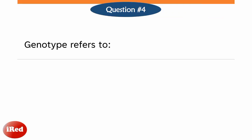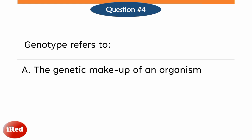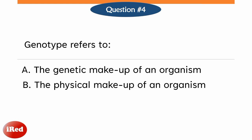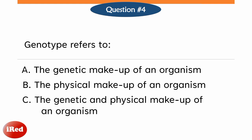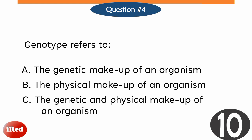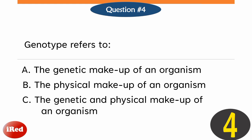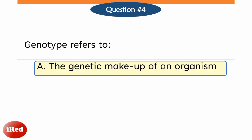Genotype refers to: letter A, the genetic makeup of an organism; letter B, the physical makeup of an organism; or letter C, the genetic and physical makeup of an organism. The correct answer is letter A. Genotype refers to the genetic makeup of an organism.